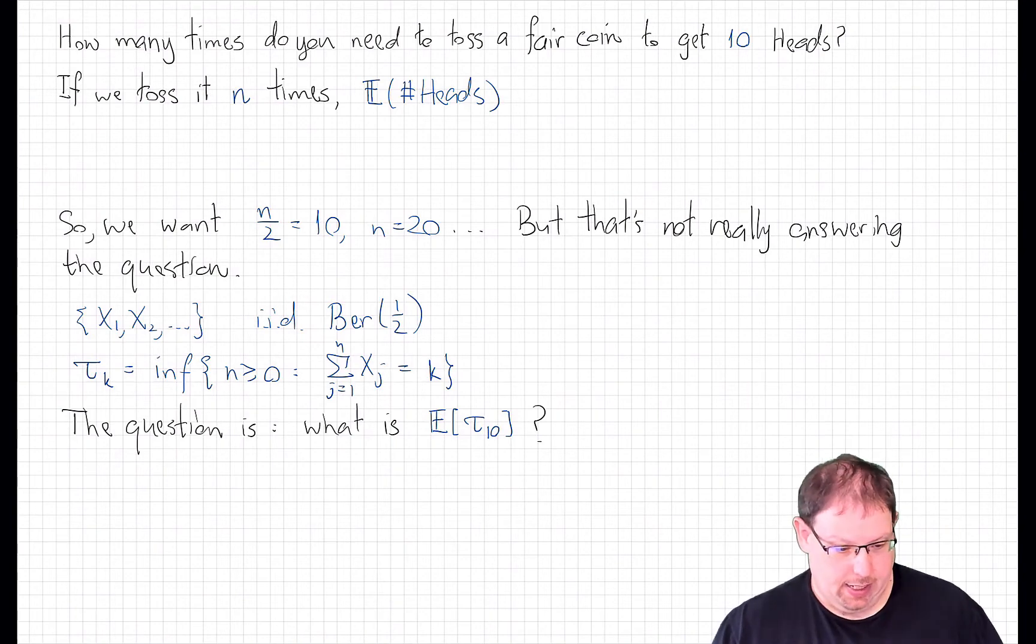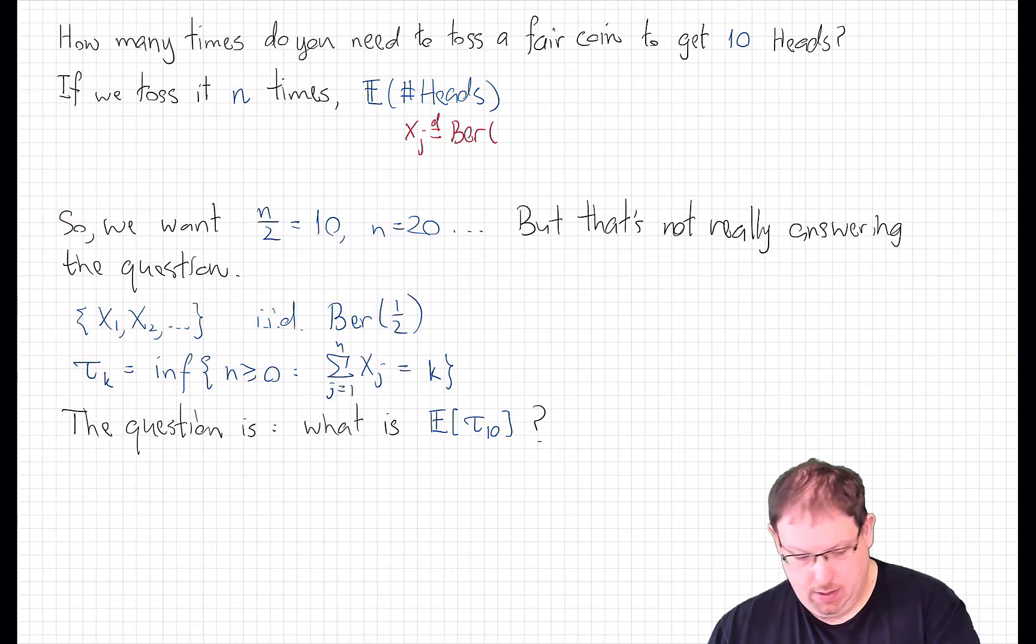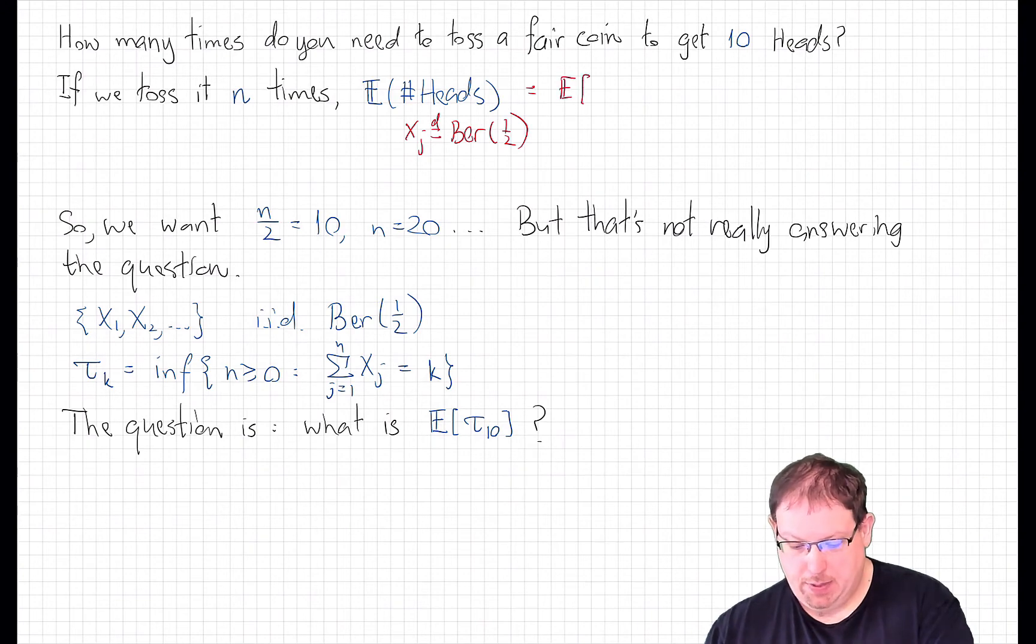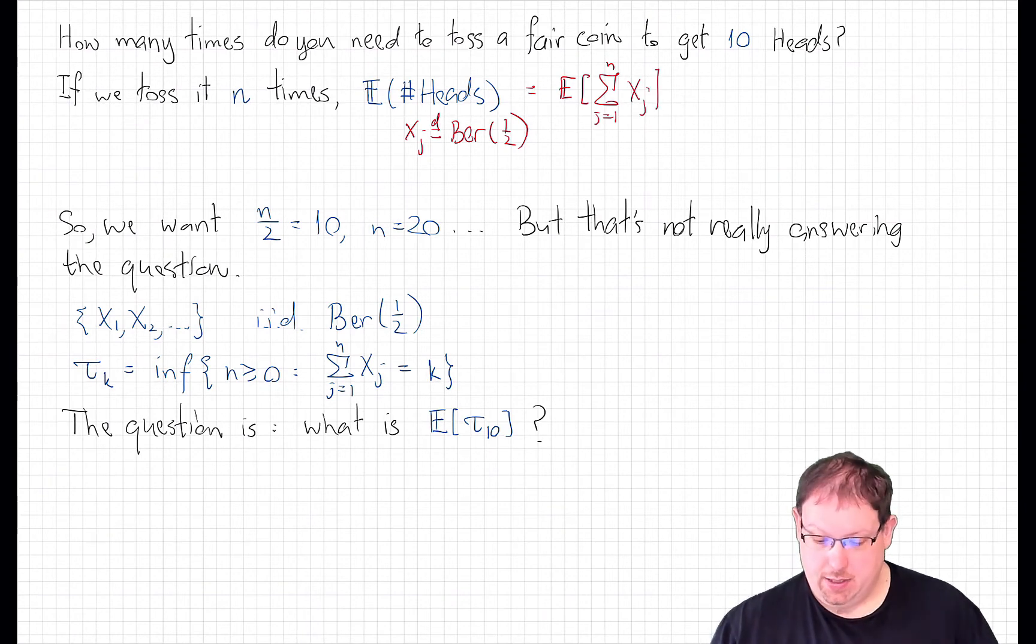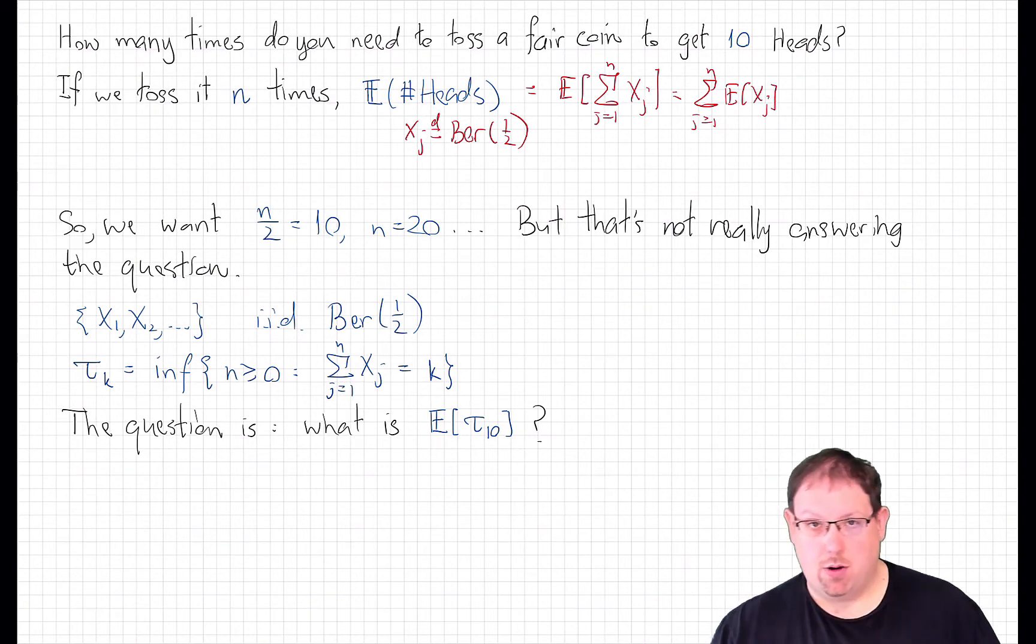That's very easy to calculate. We can model the coins as random variables xj that are Bernoulli of parameter one-half. The event that we get heads is the event that xj equals one. Therefore what we're asking about is the expected value of the sum, j going from one up to n, of xj. That's the sum of the expected values, which are all one-half, so that's n over 2.